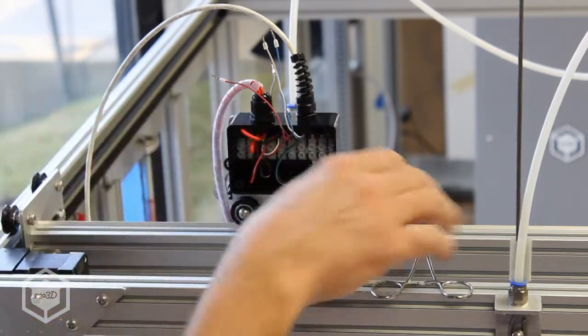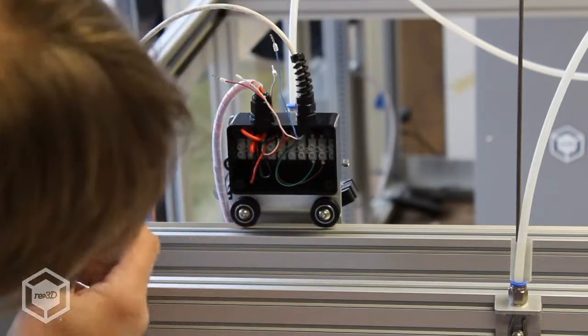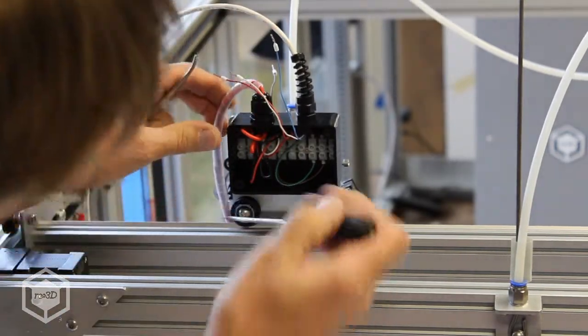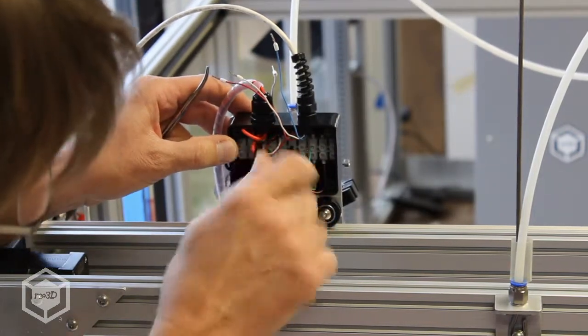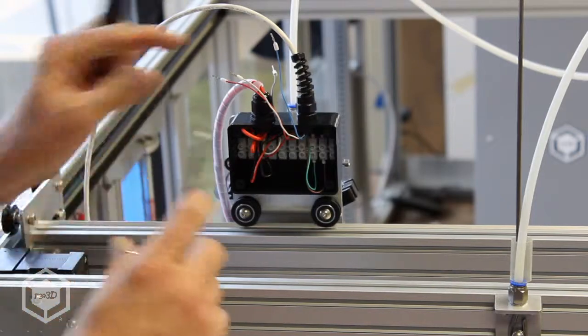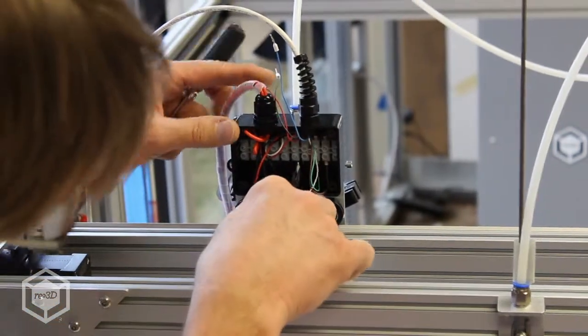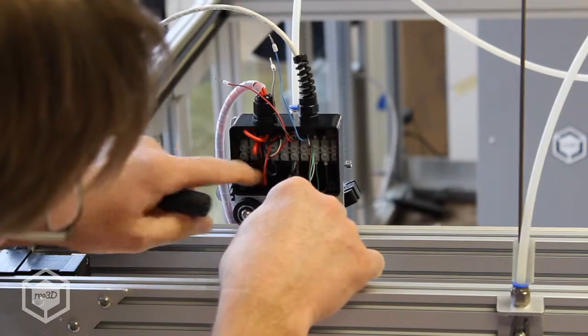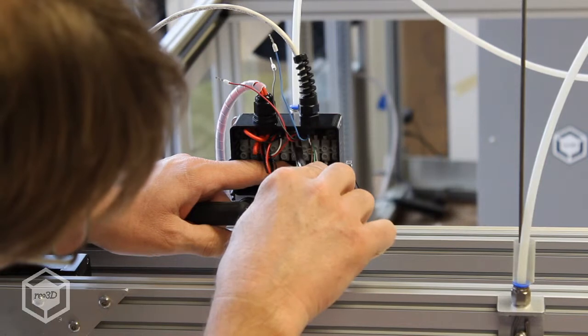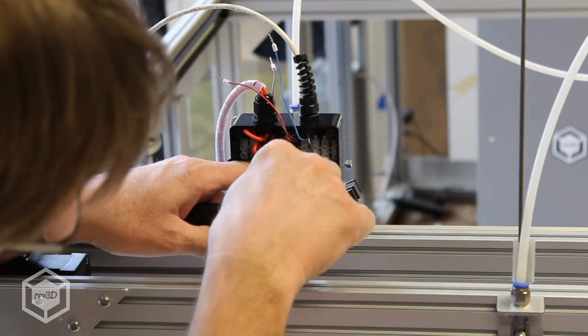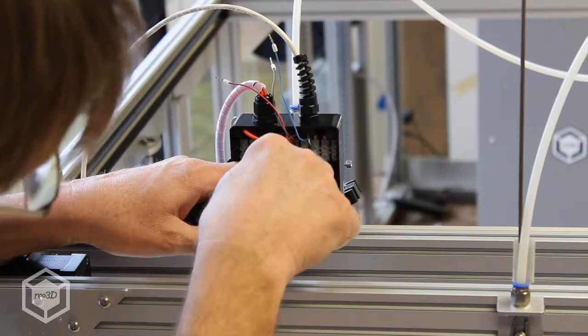Then our next one is going to be white. And the white one is actually going to pair up to the white one on the top. So the brown and the green go to the fan. The white and the blue goes to the thermistor. And then the last two red and black are going to go to the heater cartridge.